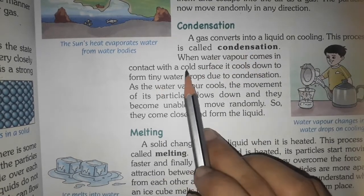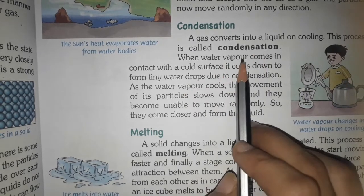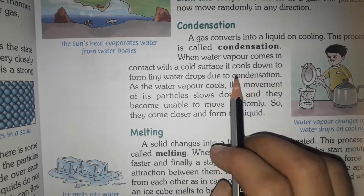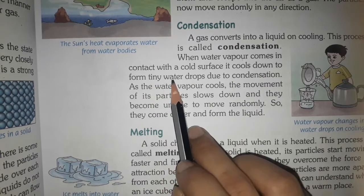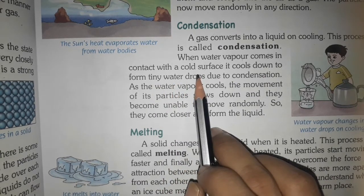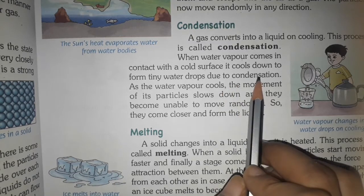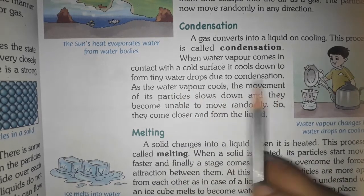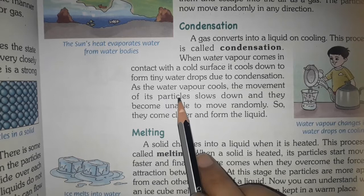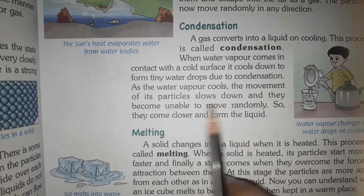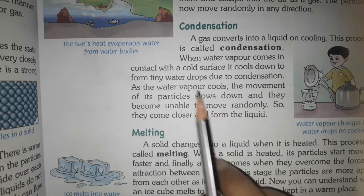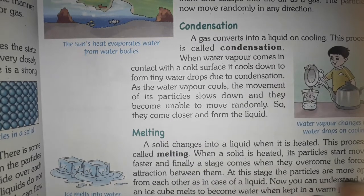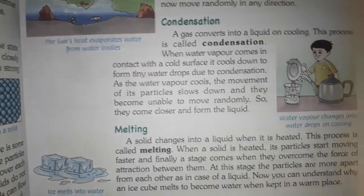When water vapor comes in contact with a cold surface, it cools down to form tiny water droplets — due to condensation process. As water vapor cools, the movement of its particles slows down, and they become unable to move randomly. So they come closer and form liquid. Gaseous form में थे, ठंडे surface की वजह से cooling मिली, और water के droplets बनके इकट्ठा हो गए।